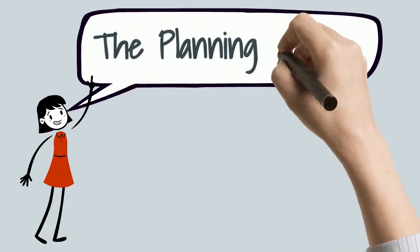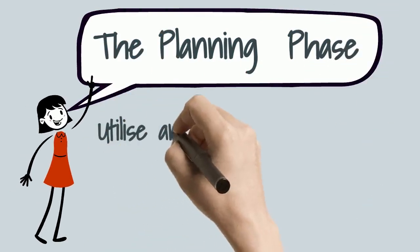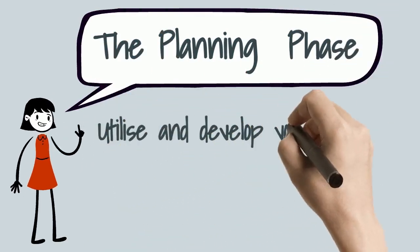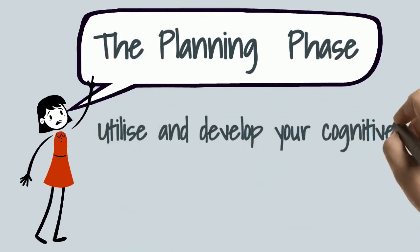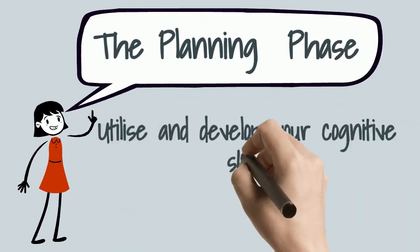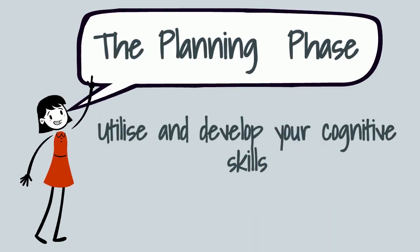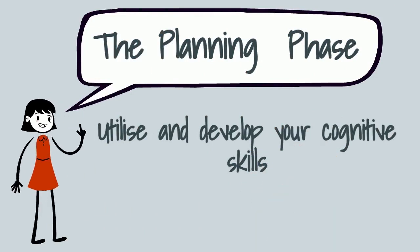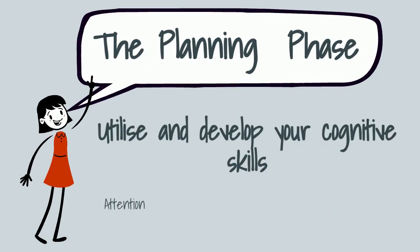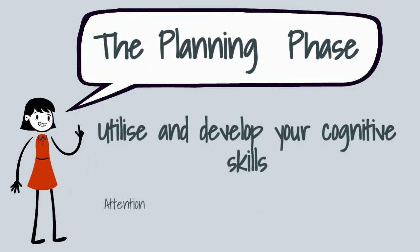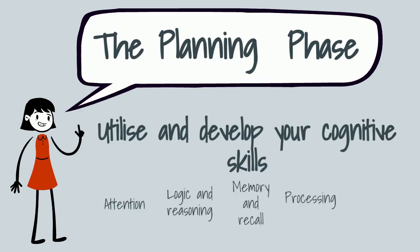Jen discovered that during the planning phase, she would have to highlight which cognitive skills she was going to use. Jen noticed that she was better at using some cognitive skills than others. She thought to herself: in the short term, she would use the cognitive skills that she was good at, and in the long term, develop the rest.